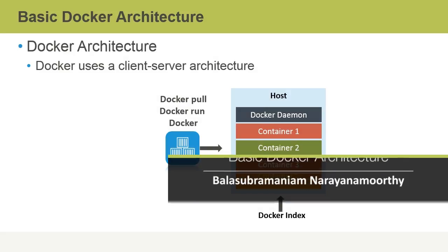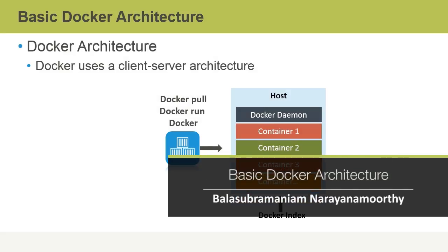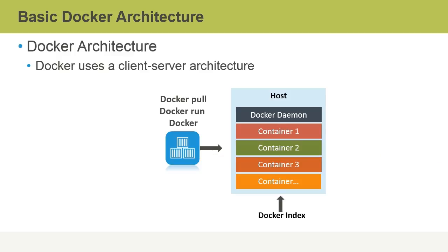In this topic, we will learn about basic Docker architecture. One of the fundamental philosophical goals of Docker is that its architecture should be as simple and as scalable as possible. And to that effect, Docker uses a simple client-server architecture. The client-server architecture can essentially be broken down into three important constituents.